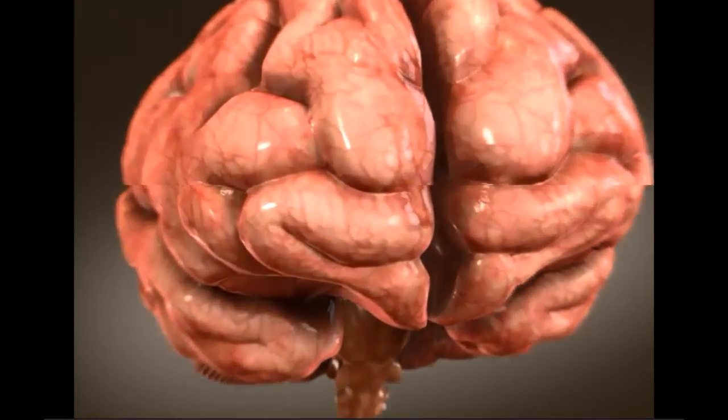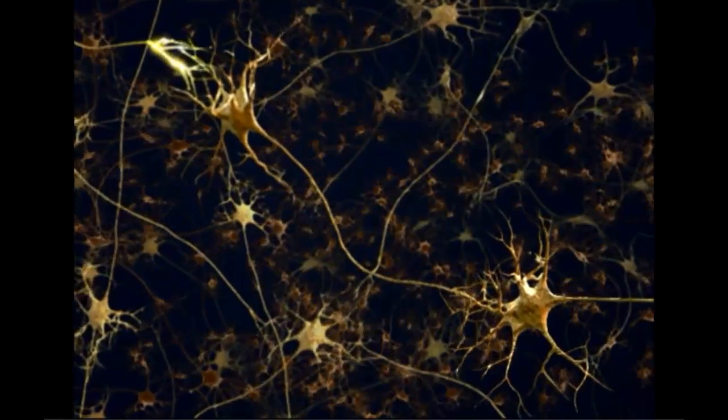The human brain alone contains about 100 billion nerve cells, called neurons.